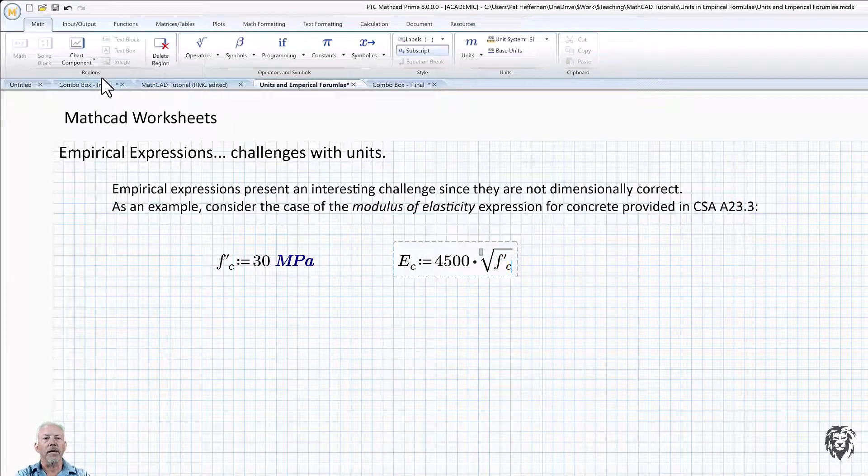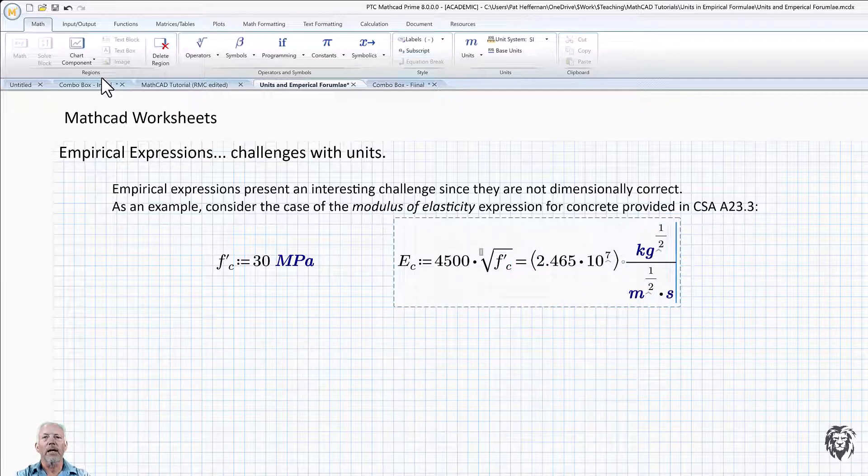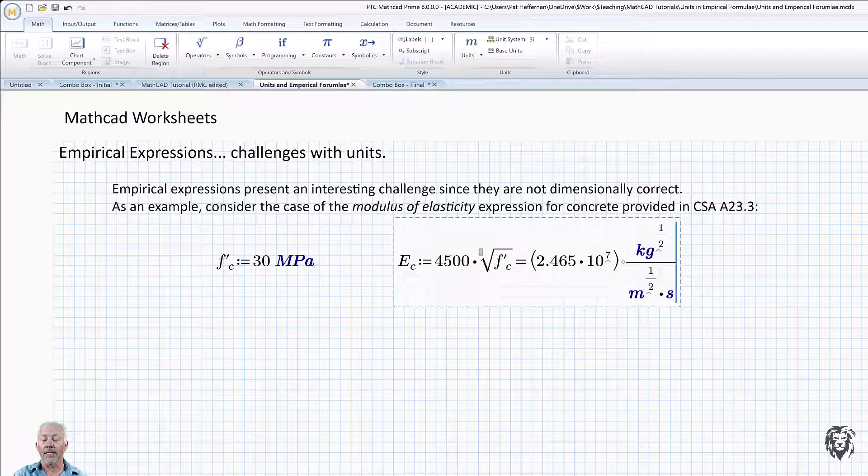And when I hit the equal sign, you're just going to see garbage because we get the right number out. But what we're not getting anymore is the right units. And so any further calculations we do using the modulus of elasticity are going to have a problem with the units.